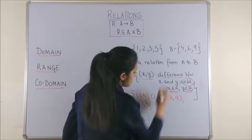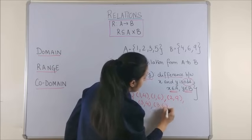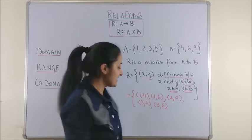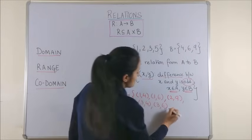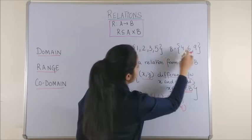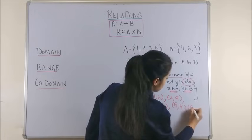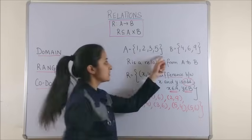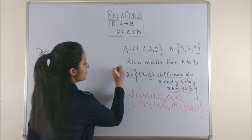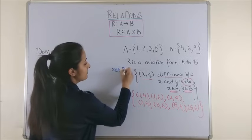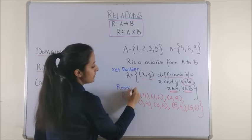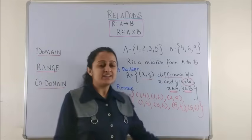3 and 4 would give us an odd number. 3 and 6 again give us an odd number. However, 3 and 9 would not because that gives us the difference as 6. Likewise, with respect to 5, we get 5 and 4, 5 and 6. And that's it because 5 minus 9 is again an even number. So, this was the set builder form. And now, we've reduced it to the roaster or the tabular form.